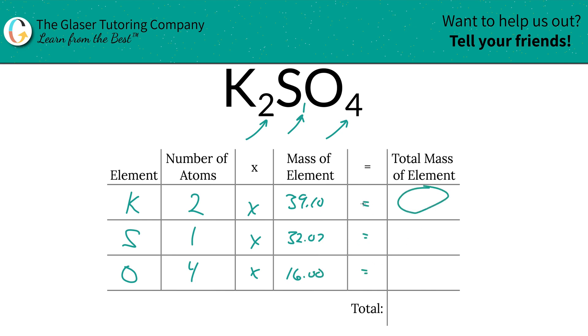Now what we're going to do is find the total mass of the element. We simply have to multiply this row across. So for potassium, the total mass of potassium here is going to be 78.20. The total mass of sulfur is going to be 32.07, and the total mass of oxygen is going to be 64.00.